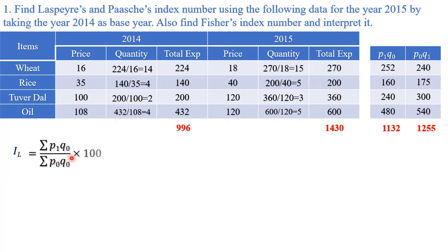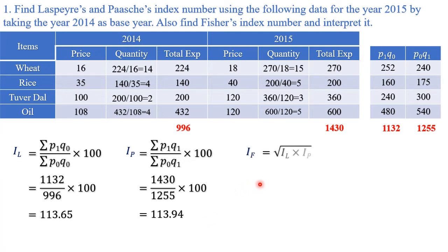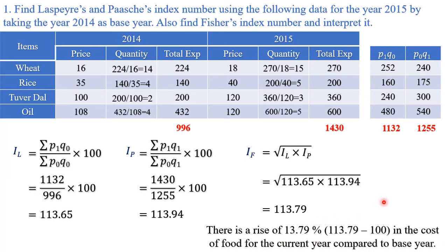Laspeyres' index number = p1·q0 / p0·q0 × 100 = 1132 / 996 × 100 = 113.65. Paasche's index number = p1·q1 / p0·q1 × 100 = 1430 / 1255 × 100 = 113.94. Fisher's index number is the geometric mean of Laspeyres' and Paasche's: √(113.65 × 113.94) = 113.79. Statement: there is a rise of 13.79% in the cost of food for 2015 compared to 2014.